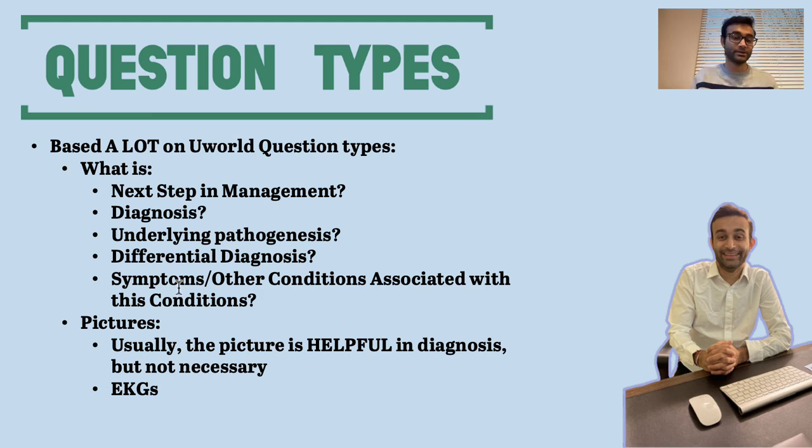And then sometimes they also ask you about symptoms and associated conditions with these diseases. So for example, celiac disease is associated with that skin finding, dermatitis herpetiformis or something like that, right? So those sorts of associations are very important and are some of the things that you'll be tested on. Some of the questions also have pictures. Usually the picture is helpful in diagnosis but not necessary for diagnosis. But this is all that you would find on UWorld.